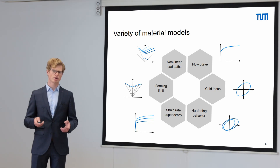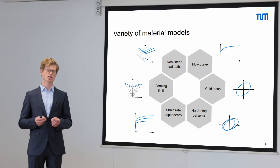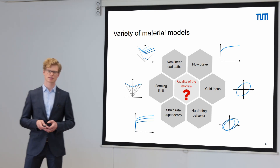Simulation inherently contains different sources of inaccuracies — for example, in representing the geometry, in modeling occurring friction, or also in modeling material behavior. For a meaningful numerical representation it is essential that especially the deterministic part of the error is in a reasonable range. Therefore, a validation of the used models is essential to assess the quality of the models.